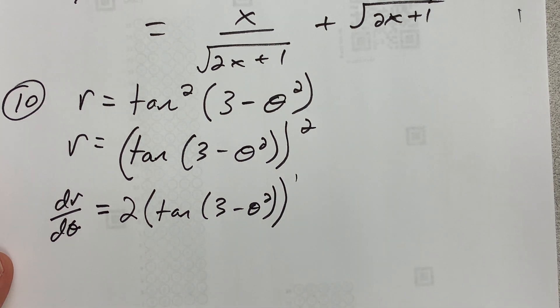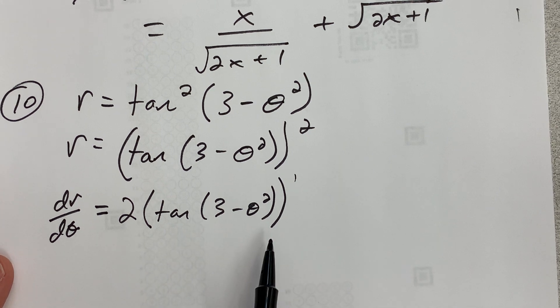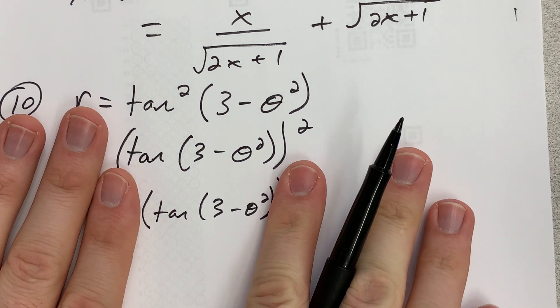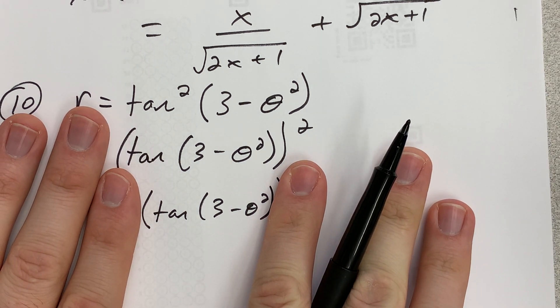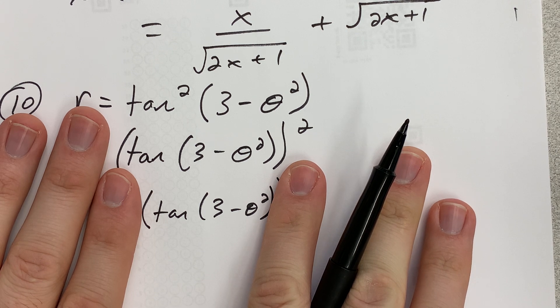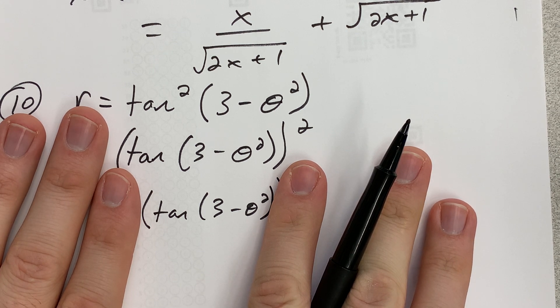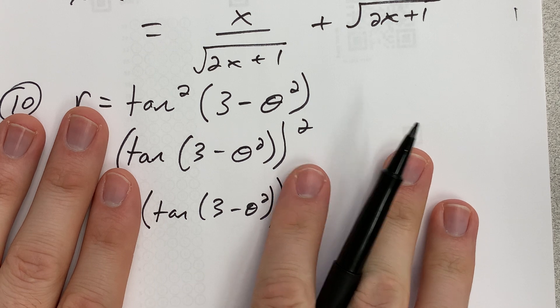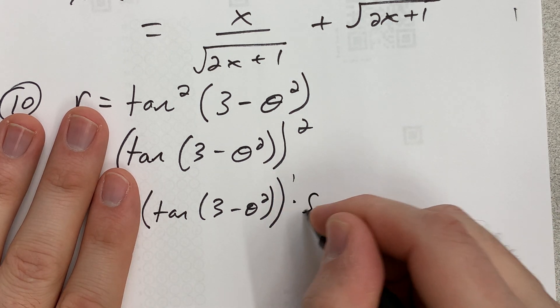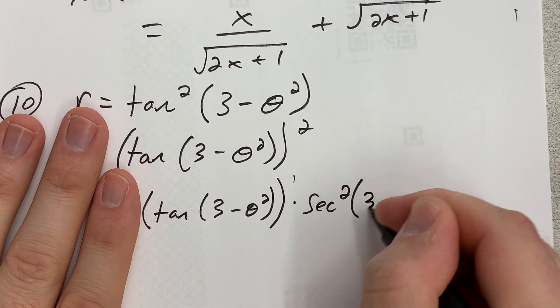The easiest way to think about this is ignore everything else and just think: if I was just deriving tangent of (3 - θ²), what would that be? Well, the derivative of tangent is secant squared. Leave the inside alone, so times secant squared, leave the inside alone.